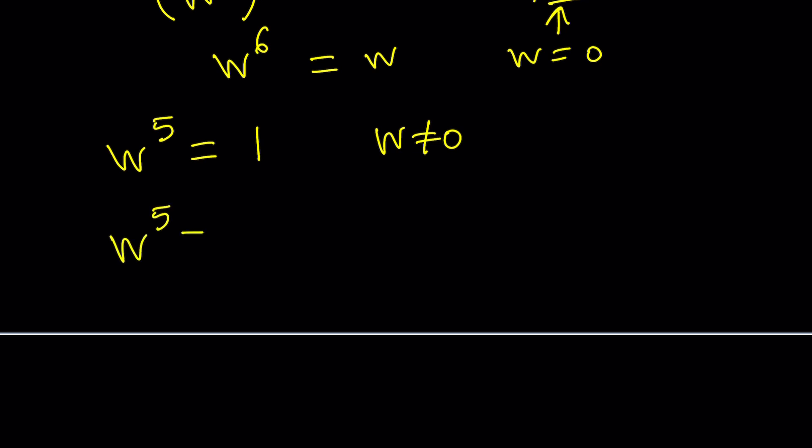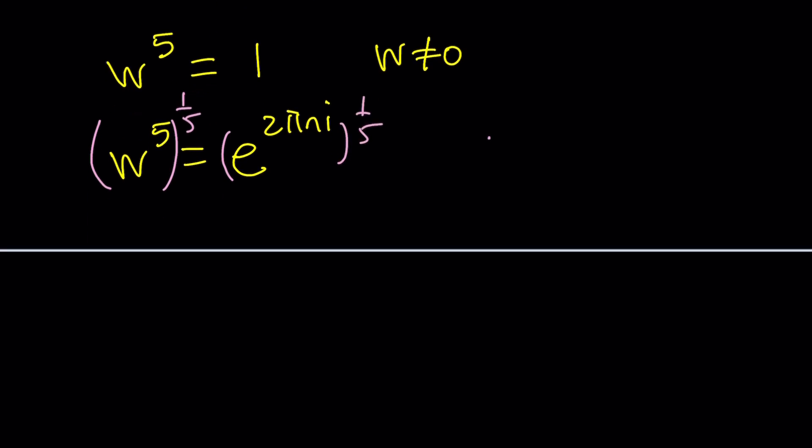You can go ahead and replace the one with e to the power 2 pi n i and raise both sides to the power 1 fifth, which should give you the answer. And then that gives you, by the way, n is an integer here. I forgot to say that, but it's always like that. So w becomes e to the power 2 pi n i divided by 5. And of course, you can replace n with 0, 1, 2, 3, and 4.